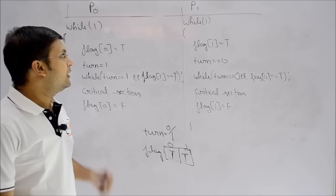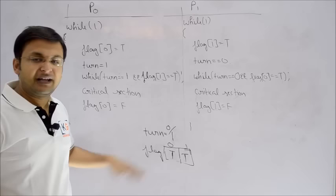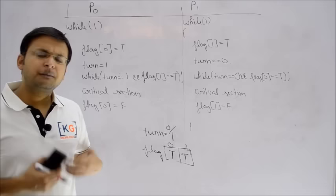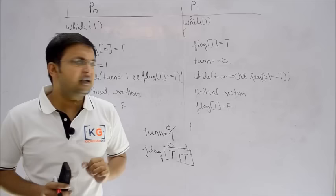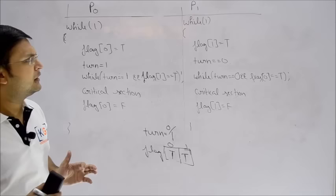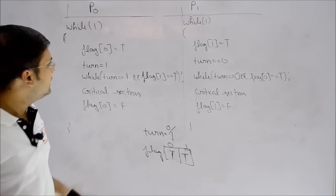After attempting two wrong logics, let's try the third method. This time I'll use both logics — I'll use the turn variable and also the flag array. In the first case, we used only the turn variable and processes were strictly alternating between P0 and P1. In the second case, we used only the flag value without turn, but the problem was if both processes set their flags to true simultaneously, the system went into deadlock.